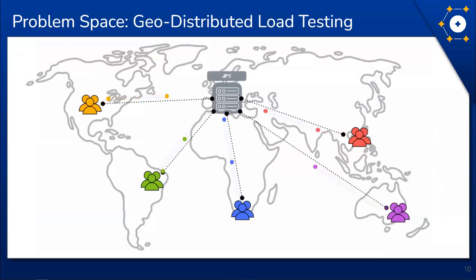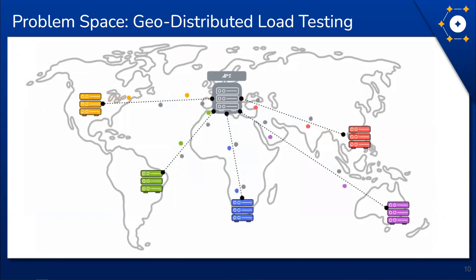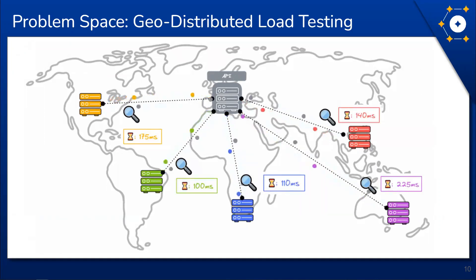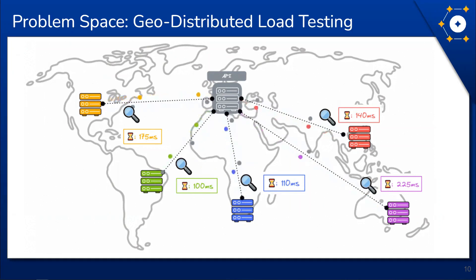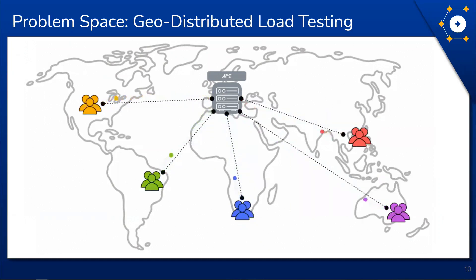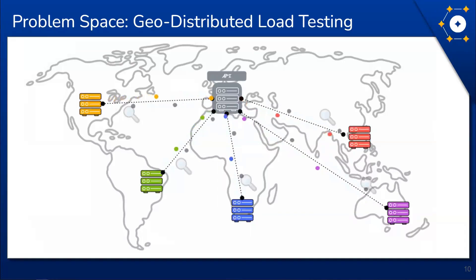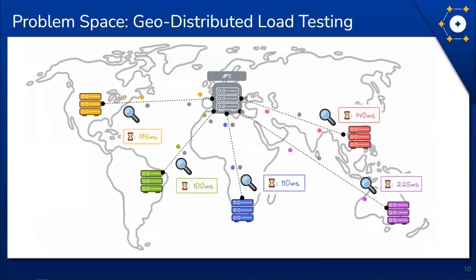Developers can encounter many challenges in developing APIs. As APIs integrate with more services and become increasingly complex, it can become difficult to determine where performance degradation occurs and what areas to optimize. The location of consumers can also affect API performance. In an ideal situation, two consumers anywhere in the world would experience similar performance, but constructing the infrastructure to test that is a non-trivial problem.